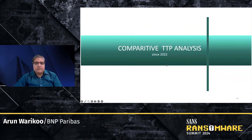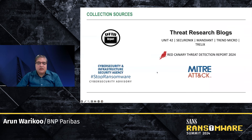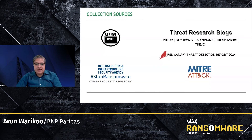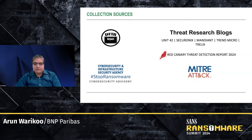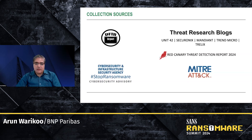Let's take a look at the comparative TTP analysis since 2022. I used the following collection sources for my analysis. The DFIR report is really good — it has a treasure trove of information on an intrusion from start to end, provides techniques, and also provides artifacts that you can translate into queries. CISA's Cybersecurity Advisory on StopRansomware is a very good resource to understand the techniques used, as are the threat research blogs from vendors highlighted here. The Red Canary Threat Detection Report provides a lot of information on techniques used by threat actors and ranks them. And finally, you have MITRE ATT&CK that you want to leverage a lot.